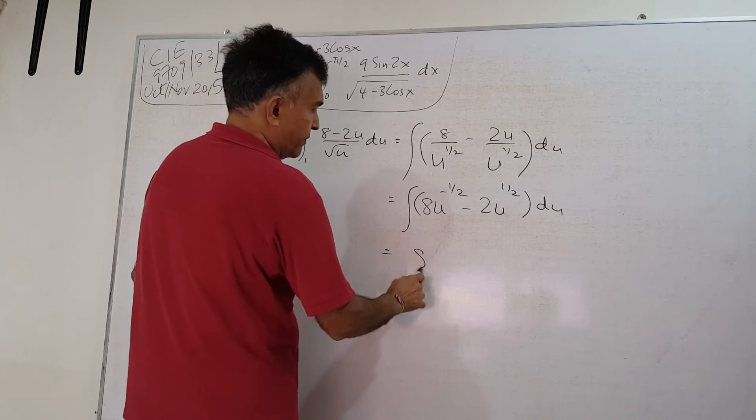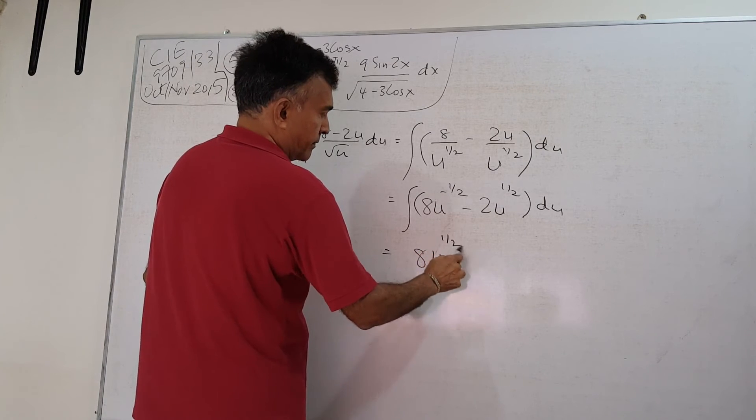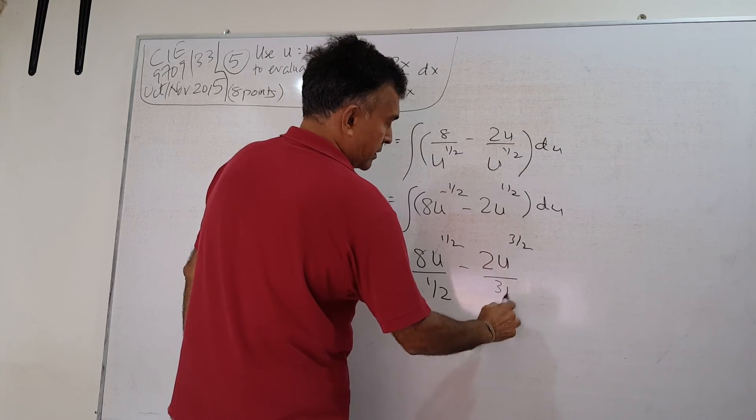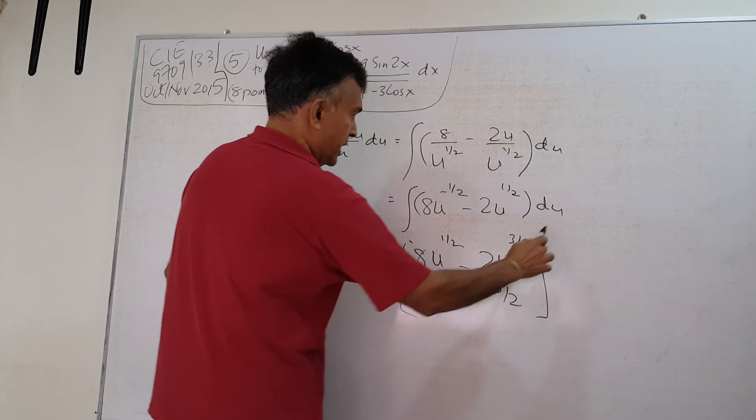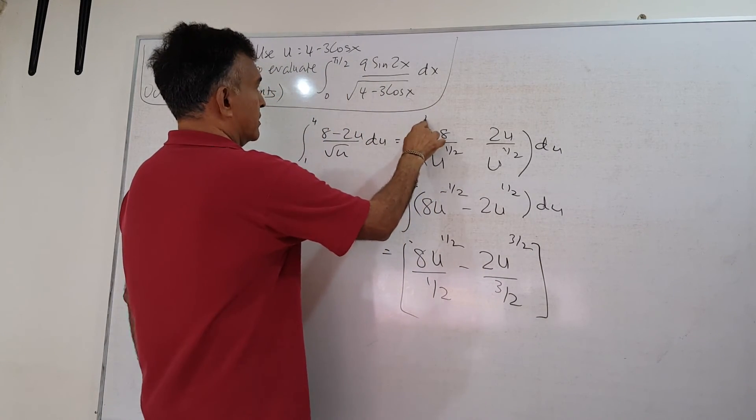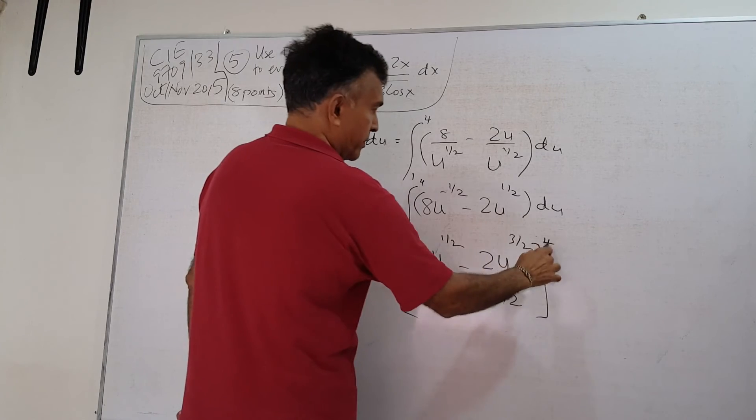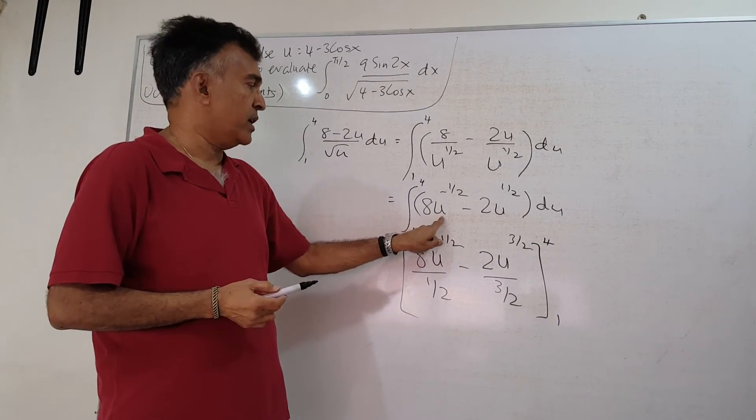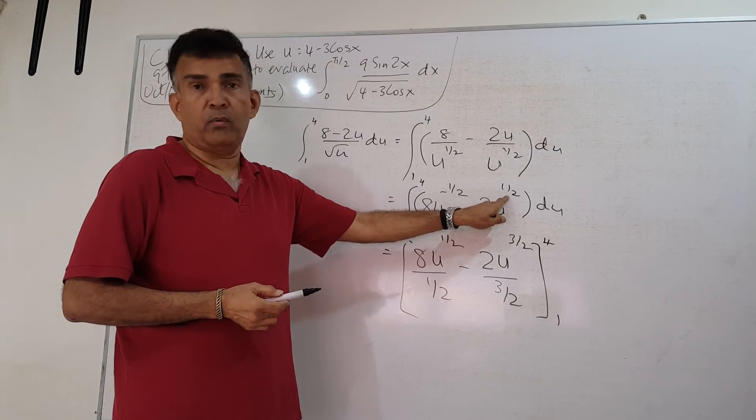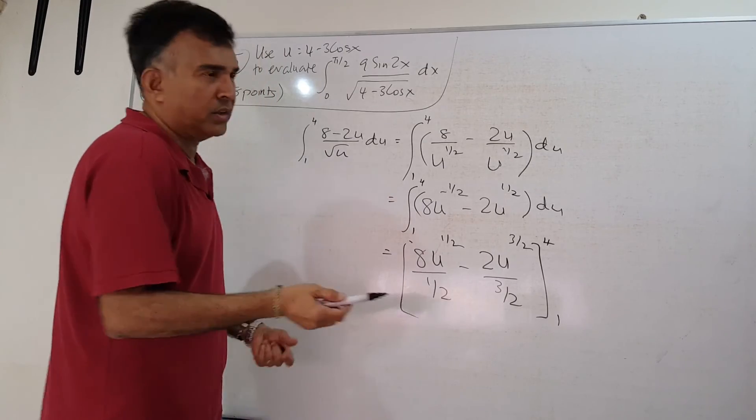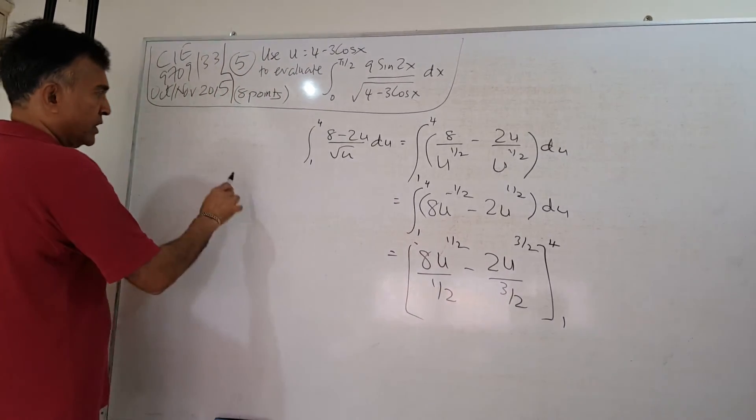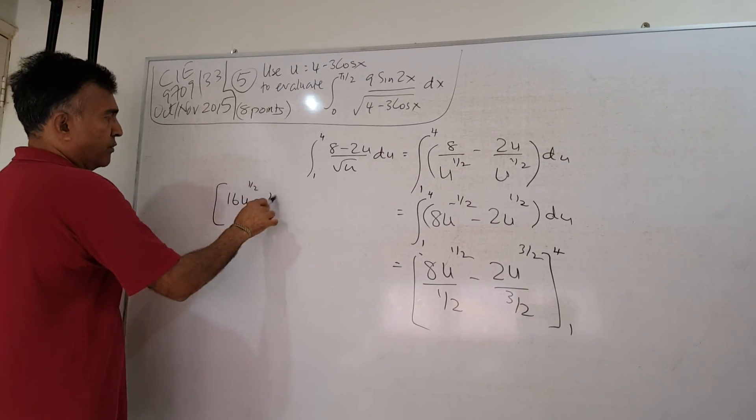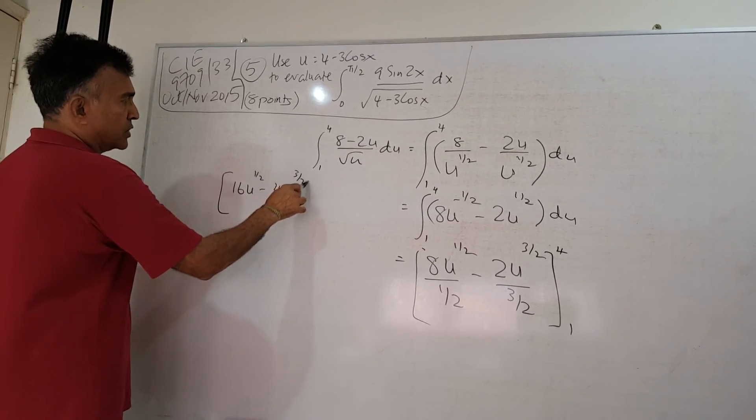Increase the power by 1. And I have my limits. Let's plug it in here. 1, 4, 1, 4. And I have my upper limit 4 and my lower limit 1. Increase the power by 1, you'll get a half. Bring it down. Increase the power by 1, you'll get 3 over 2. Bring it down. Now all this next is just plugging in the numbers. So I'll have 16u to the power of half minus 4 over 3u to the power of 3 over 2. 2 divided by 3 over 2 is 4 over 3.